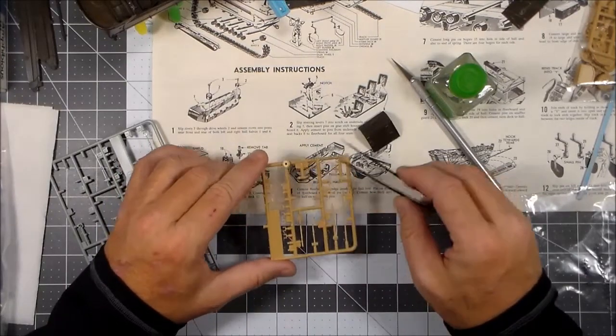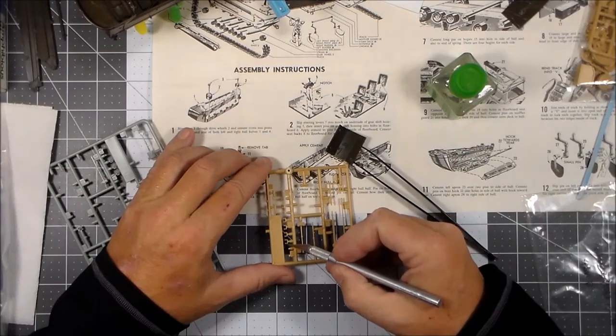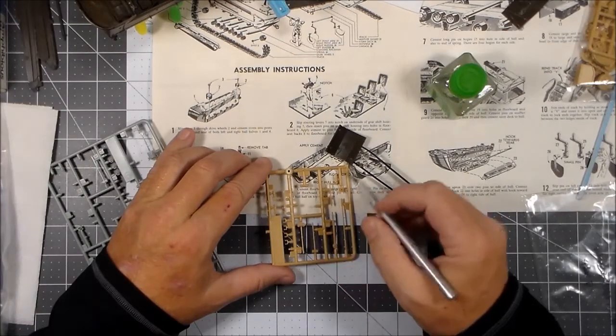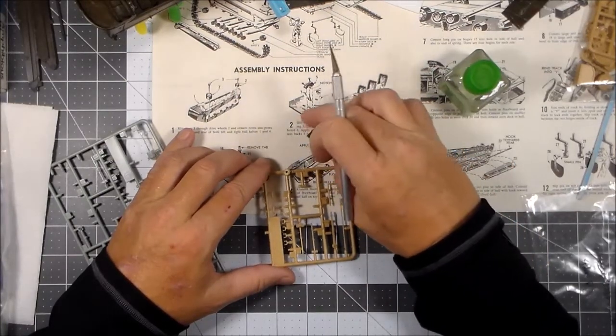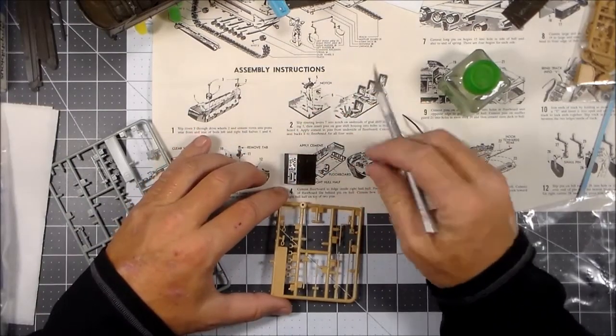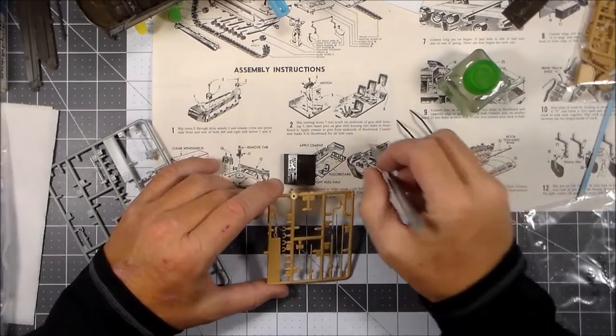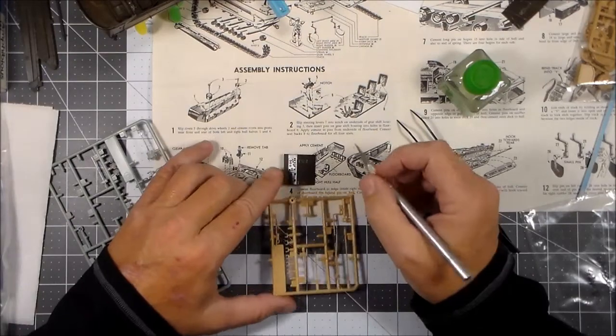And then I have the remainder of them on this remaining sprue from the Academy M3 Stuart Honey. This is a good reason why you should keep all your spare parts because they come in handy. So I'll be able to use all these right here. And what I'll do is these little attachment points here, I'm going to cut them off flush on the bottom and then just glue these directly onto that control box or whatever that is right there. That cover goes right on there. So that's what I've decided to do with that. So once I get that done we'll take a look and see how things are coming.